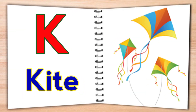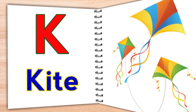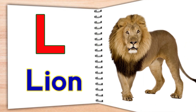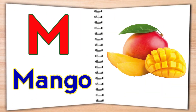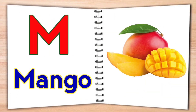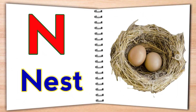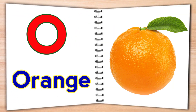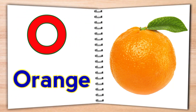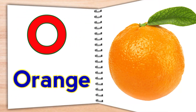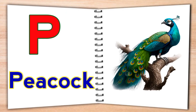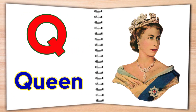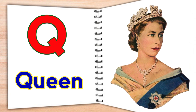K for kite, L for lion, M for mango, N for nest, O for orange.